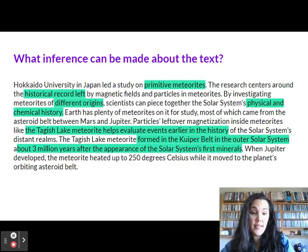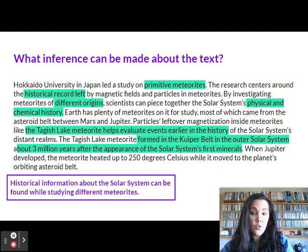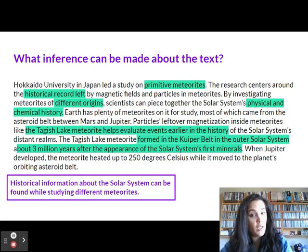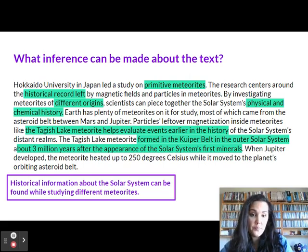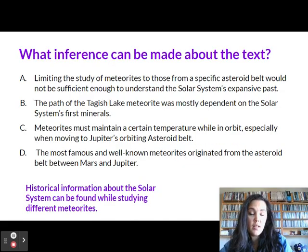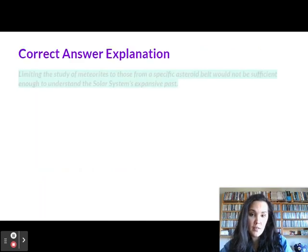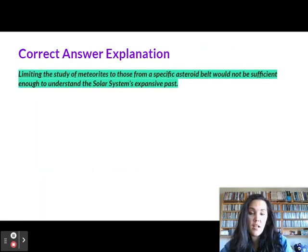So here's an inference that I can make: historical information about the solar system can be found while studying different meteorites. Now let's see if my inference aligns with any of the multiple choice. Let's take a look at the correct answer. You can see how A aligns best with my inference — limiting the study of meteorites to those from a specific asteroid belt would not be sufficient enough to understand the solar system's expansive past.